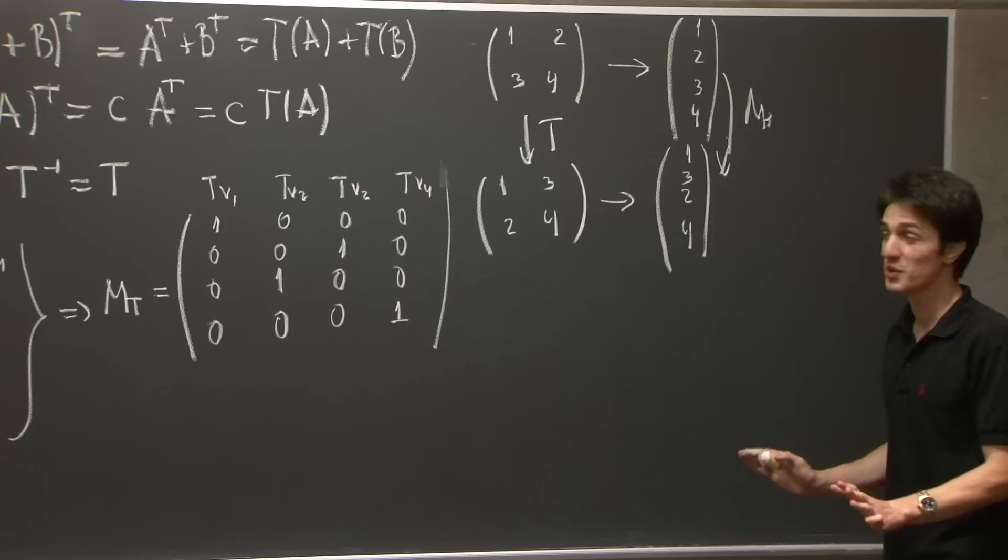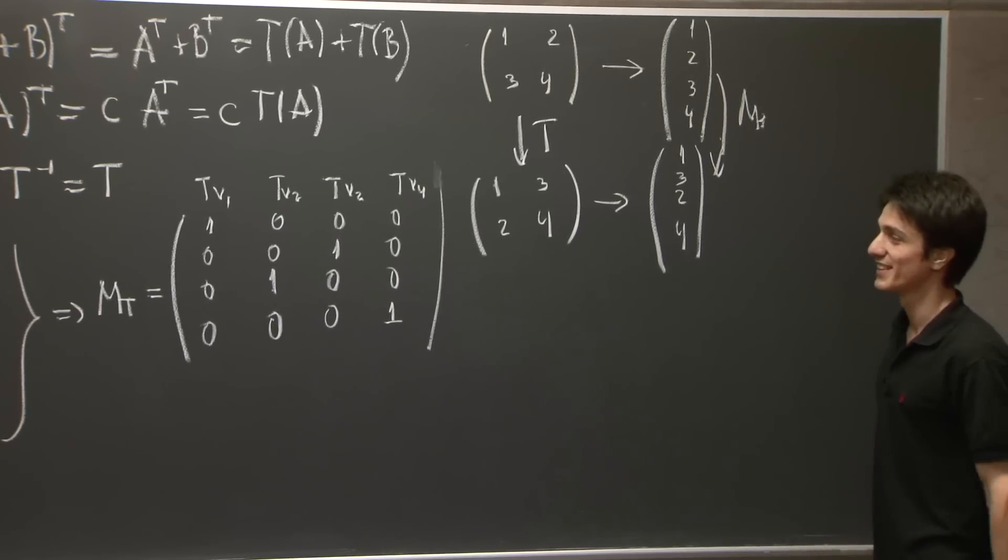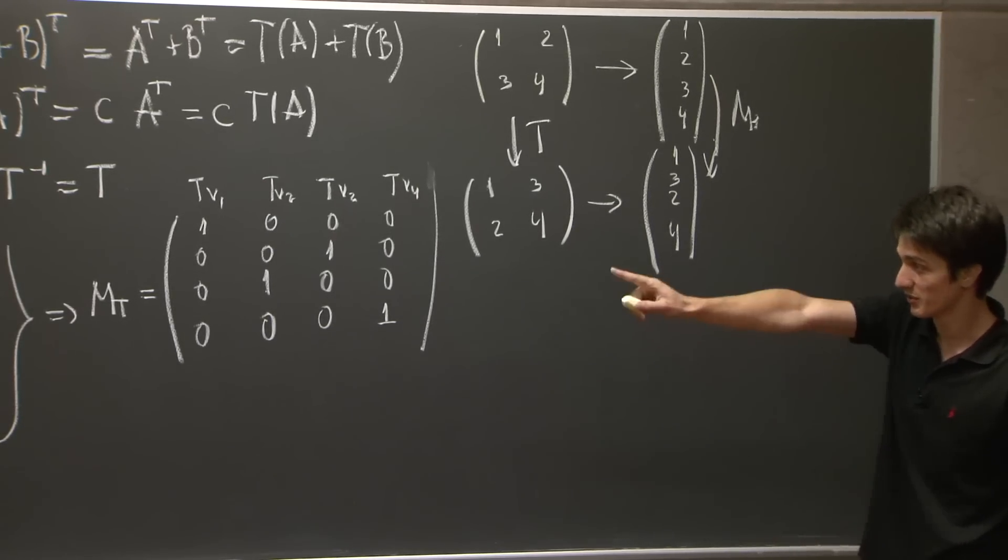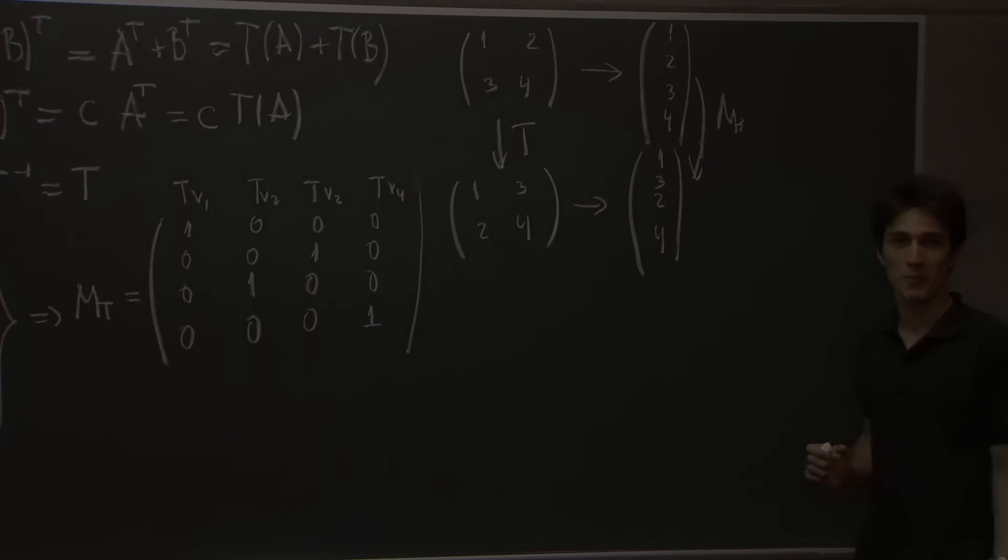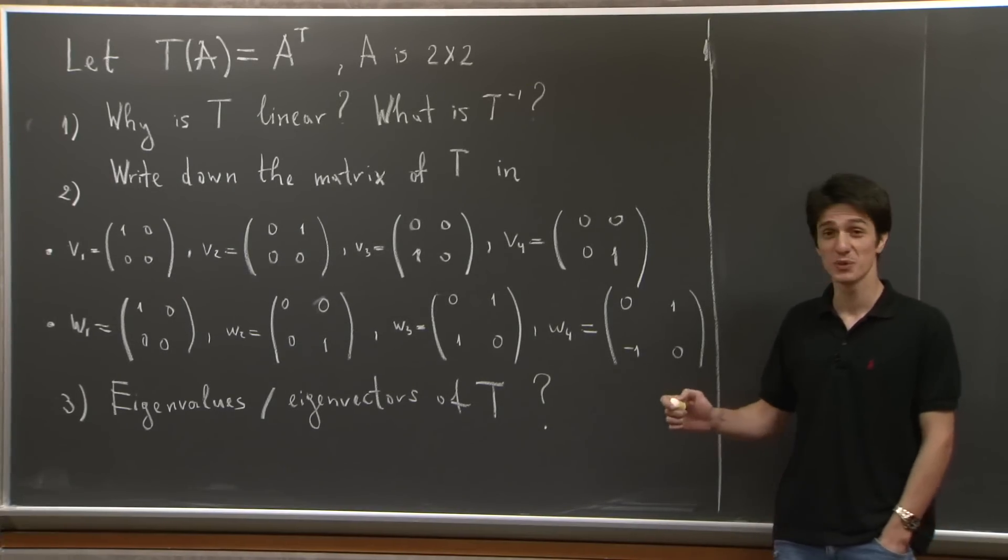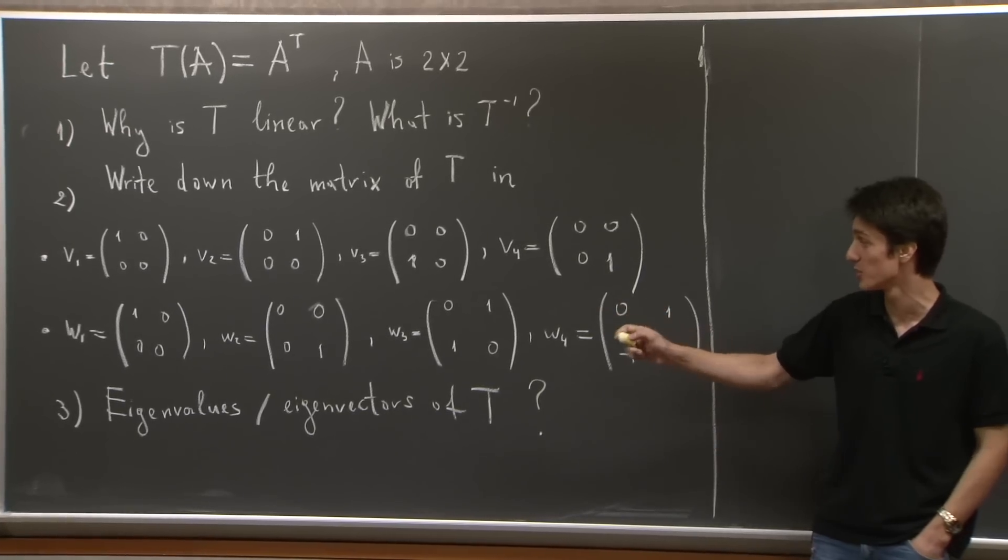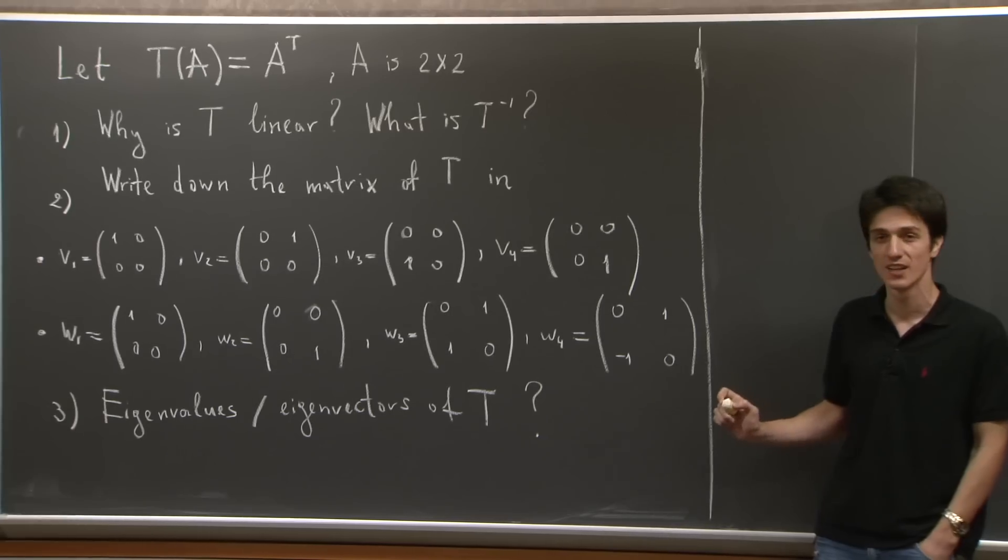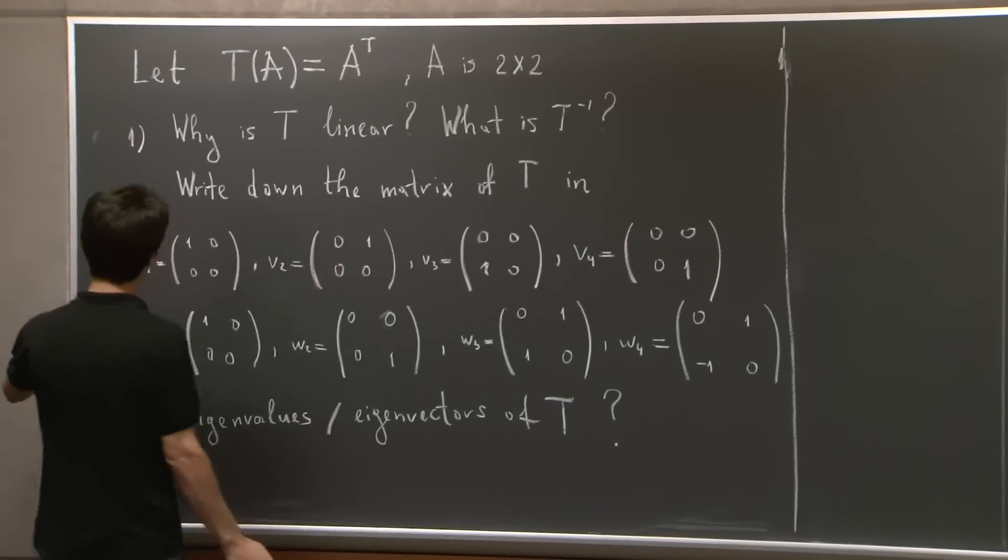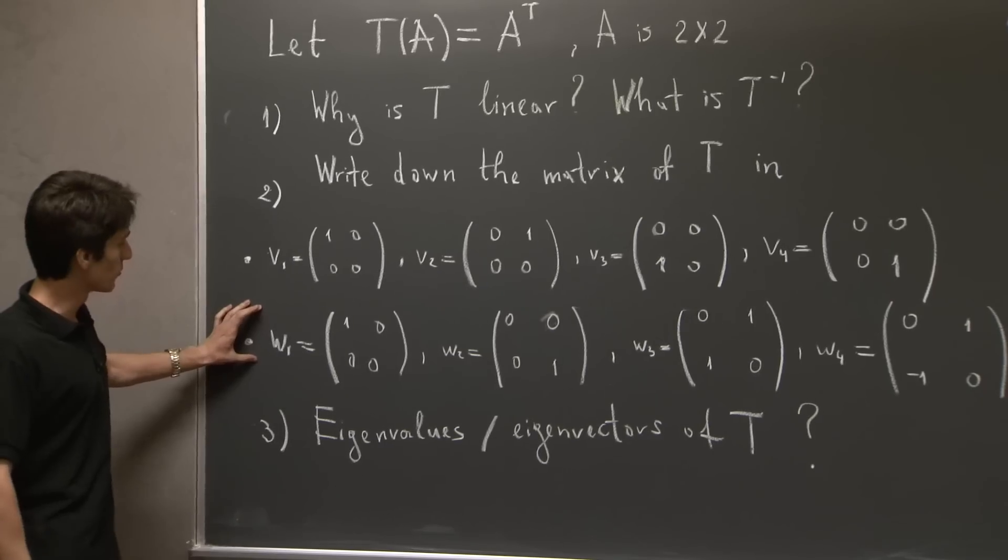So we'll pause for a bit so that I erase the board. And we're going to return with the representation of T in the basis W1, W2, W3, and W4. So let's now compute the matrix of T in the basis W1, W2, W3, and W4. We play the same game. We look at how T acts on each of the basis vectors.